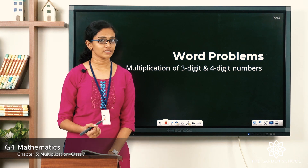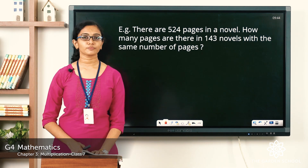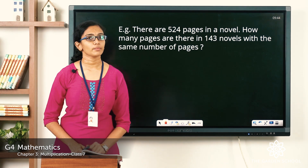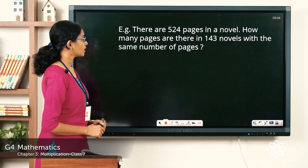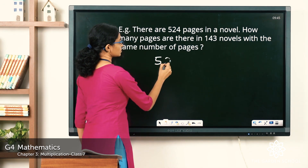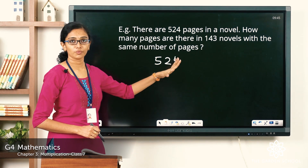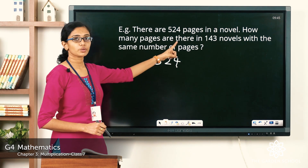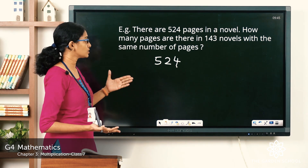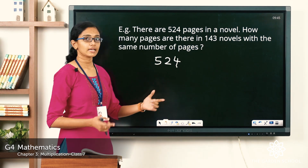We can go back to the addition word problems video as a reference. Let's see the first question: there are 524 pages in a novel — how many pages are there in 143 novels with the same number of pages? So what you are asked to find out: you have a novel with 524 pages, and you have 143 novels, each with 524 pages. You need to find the total number of pages in 143 novels.